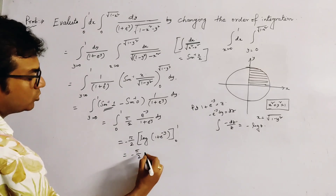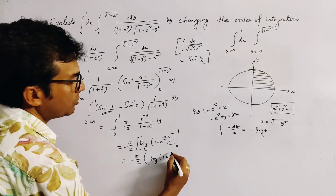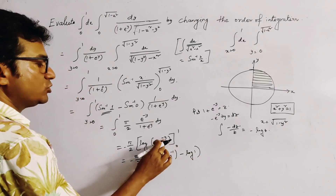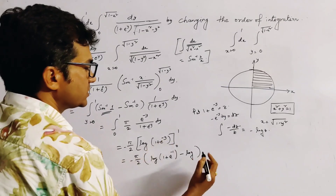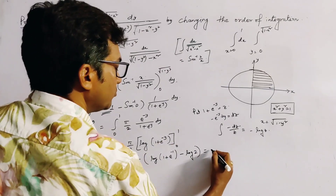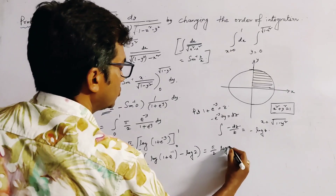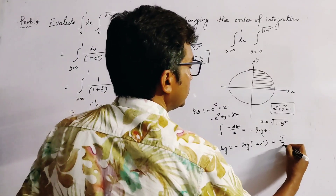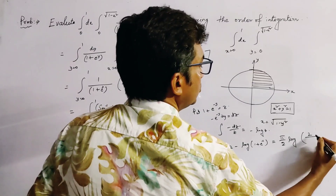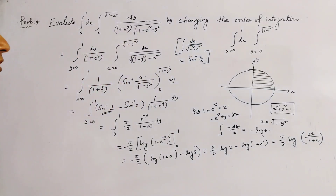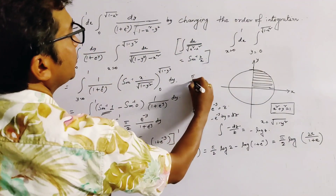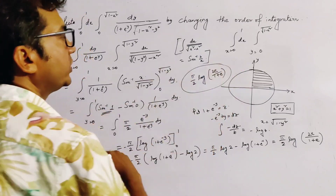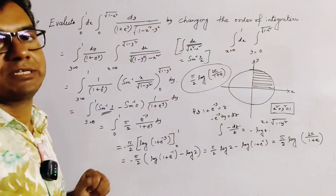Substituting the limits: pi over 2 times [log(1 plus e to the power minus 1) minus log(1 plus 1)], which is pi over 2 times [log(1 plus e to the power minus 1) minus log 2]. This simplifies to pi over 2 times log(2e over (1 plus e)). So the value of the integration is pi over 2 times log(2e over (1 plus e)).